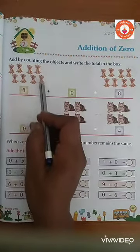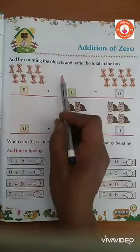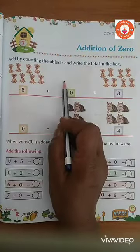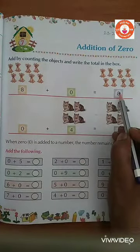One, two, three, four, five, six, seven, eight. And here nothing is there. So, the answer is 8.